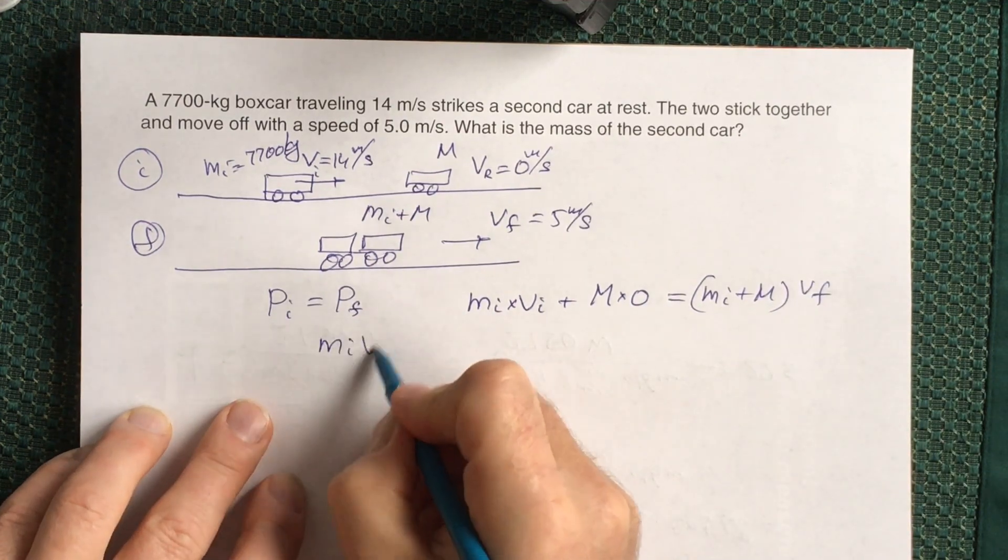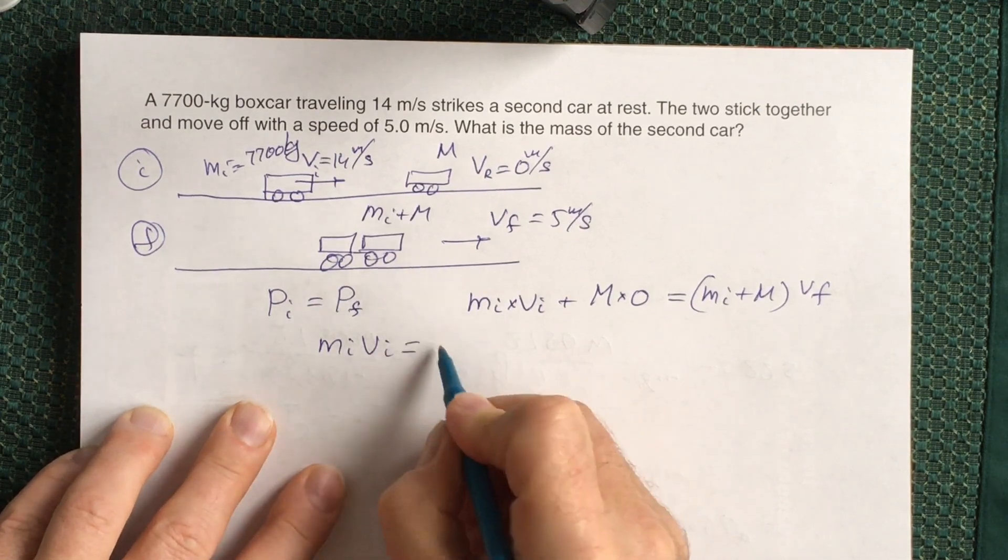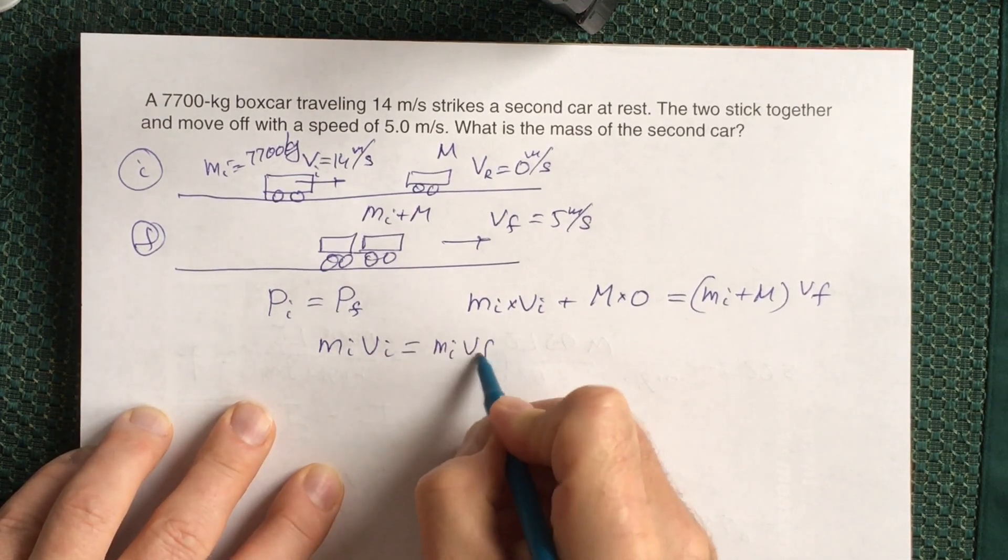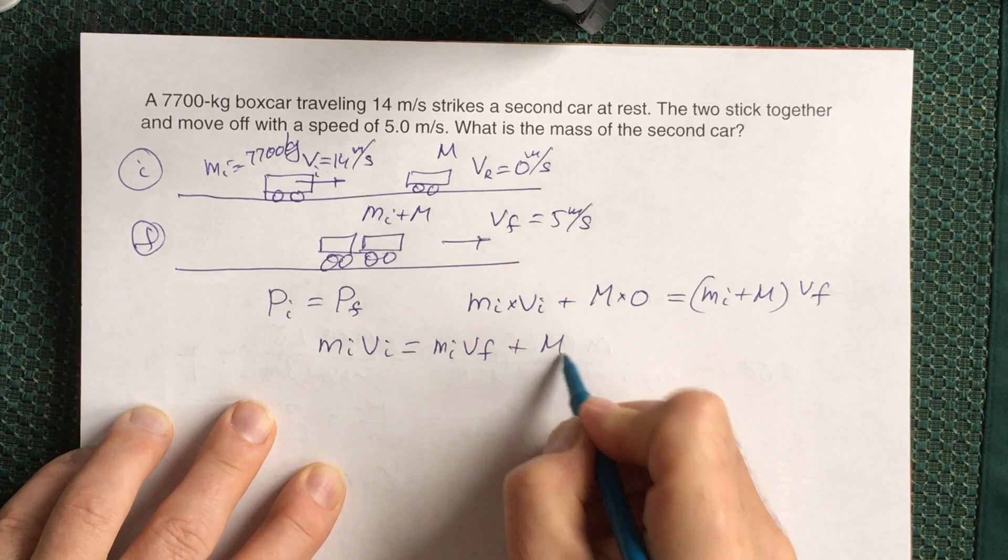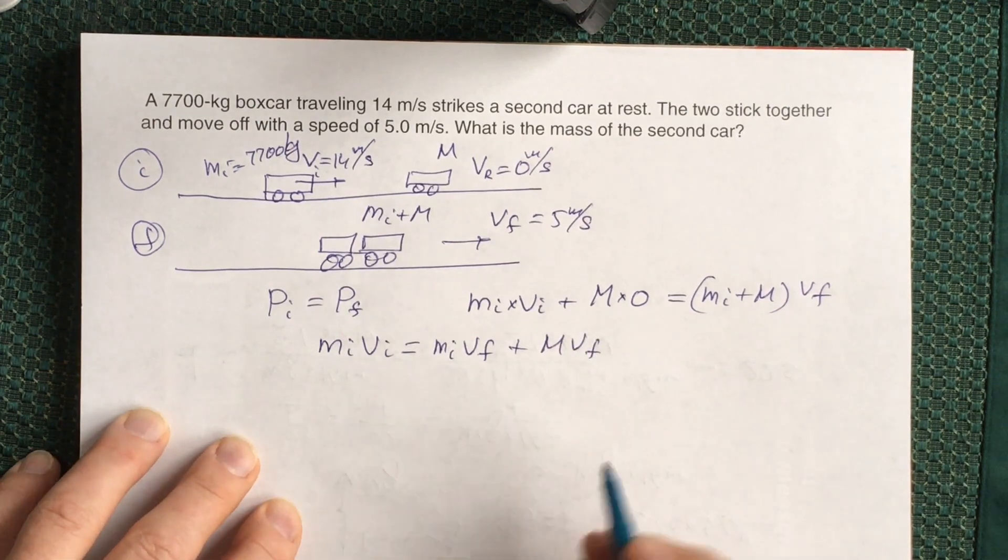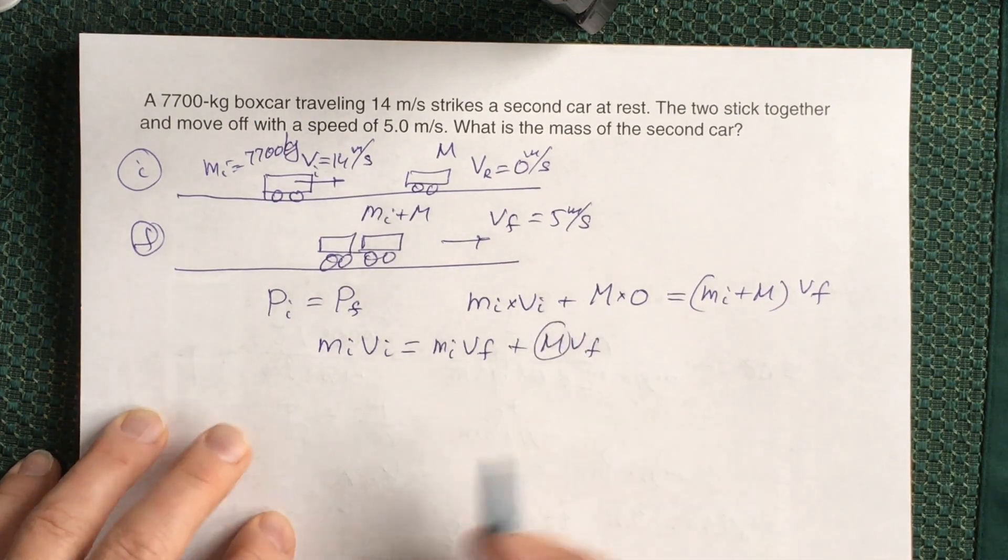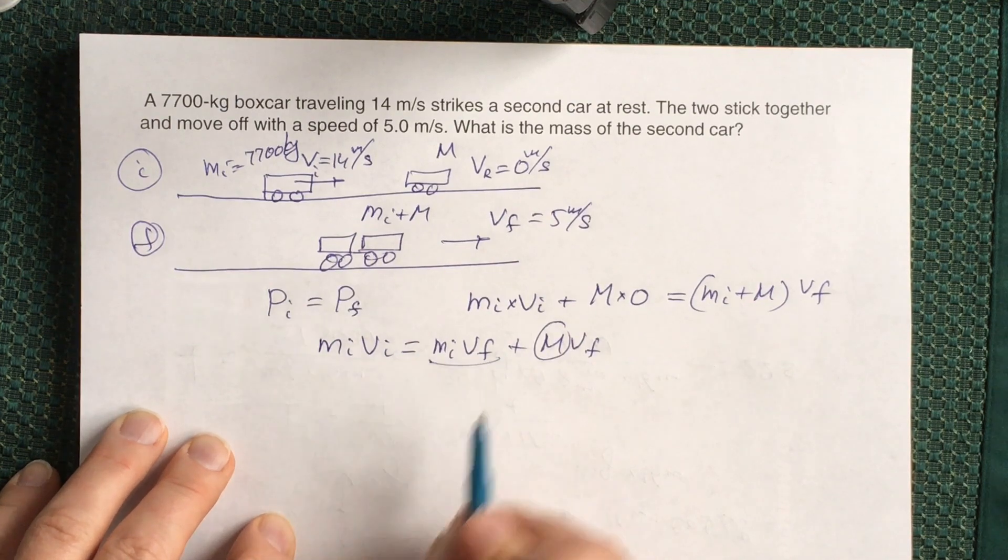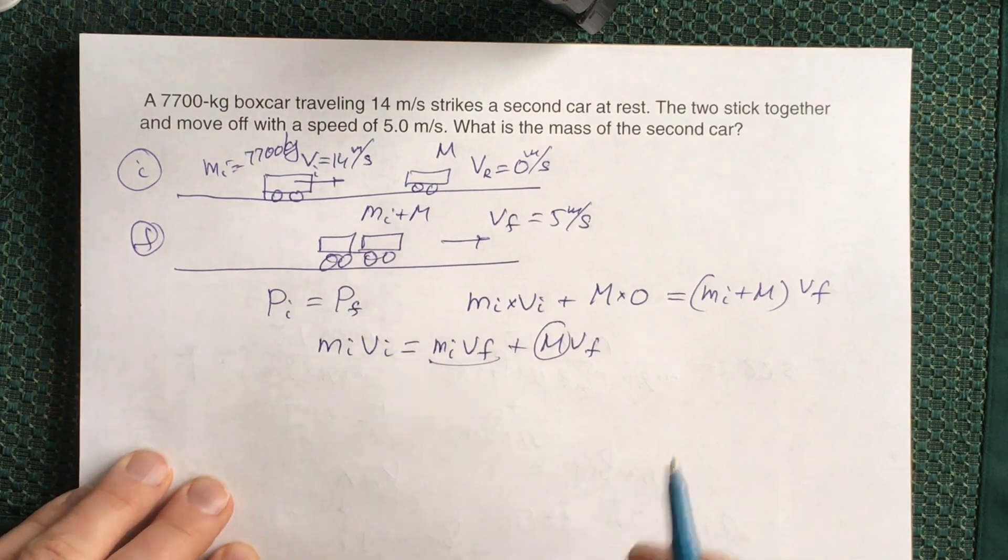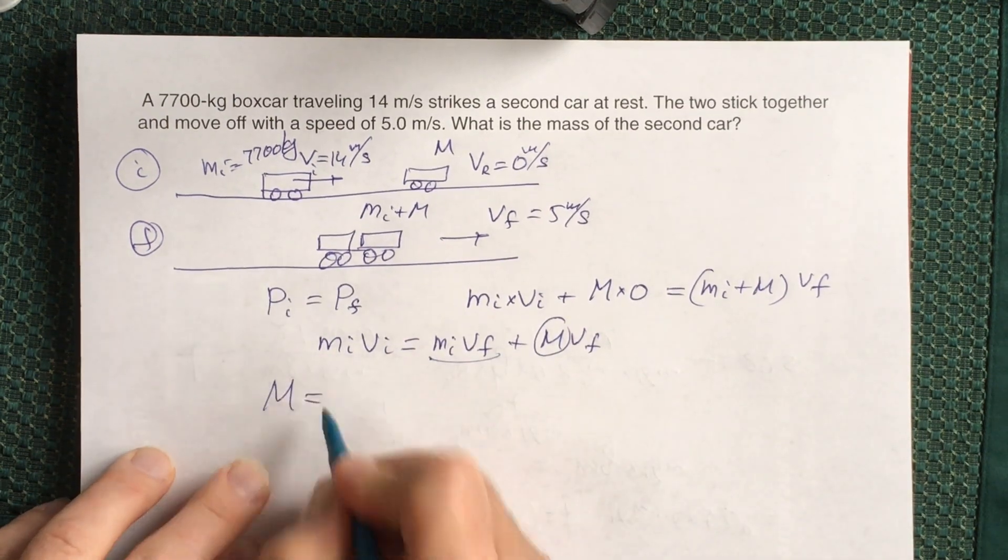Our unknown is M capital, so we move the first term to the left and divide by V final. We'll have an expression for M capital as m initial times (V initial minus V final) divided by V final.